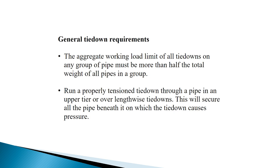General Tie-Down Requirements. The aggregate working load limit of all tie-downs on any group of pipe must be more than half of the total weight of all pipes in a group. Run a properly tensioned tie-down through a pipe in an upper tier or over lengthwise tie-downs. This will secure all the pipe beneath it on which the tie-downs cause pressure.